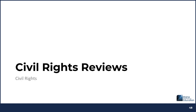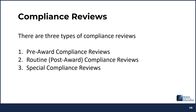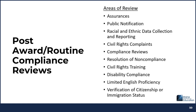The next topic is civil rights reviews. There are three types of compliance reviews: a pre-award compliance review, a routine or post-award compliance review, and special compliance reviews. The areas of routine compliance reviews include assurances, public notification, racial and ethnic data collection and reporting, civil rights complaints, compliance reviews, resolution of non-compliance, civil rights training, disability compliance, limited English proficiency, and verification of citizenship or immigration status.